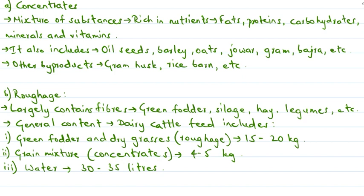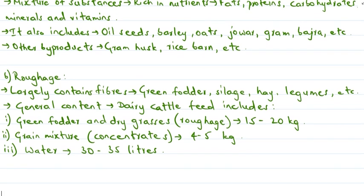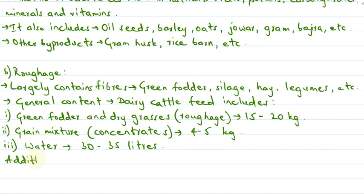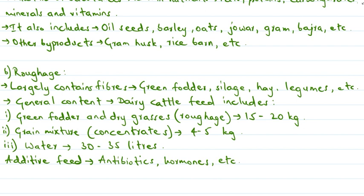Apart from the above content, the dairy cattle feed also contains additive feed such as antibiotics, minerals, and hormones. These facilitate the growth of animals, help obtain good yield of milk, and also protect the cattle from diseases.